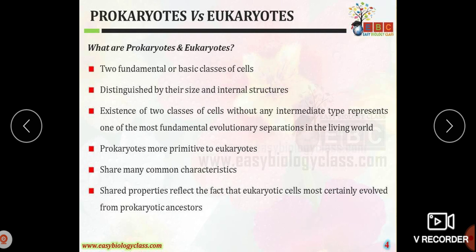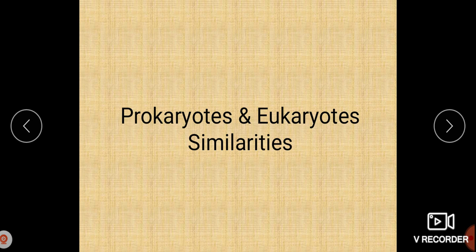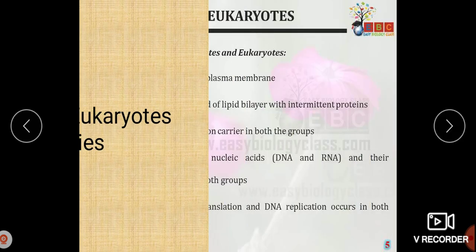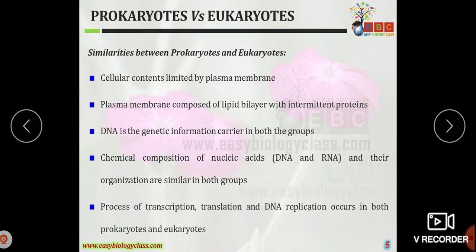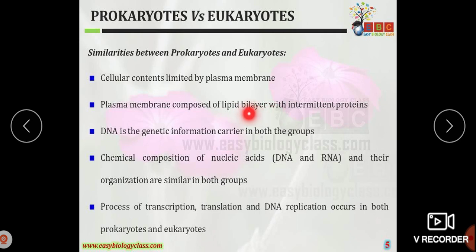Now we will see the similarities between prokaryotes and eukaryotes. The cellular content, called cytoplasm, is limited by a plasma membrane in both cell types. The plasma membrane is composed of a lipid bilayer with intermittent proteins, which can be classified as integral proteins or extrinsic proteins.